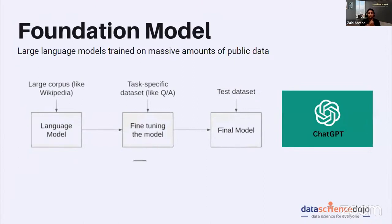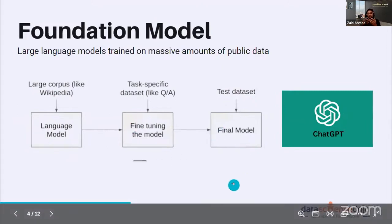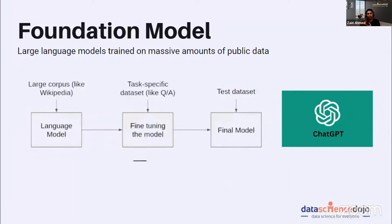What you see nowadays — Bard, ChatGPT, Claude — are foundation models built on billions of parameters and a huge amount of public data. What OpenAI did was scrape websites and put all that data into the context of their language model to build ChatGPT on top of it. That was a brief introduction about how foundation models work.